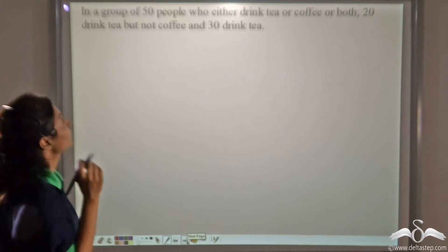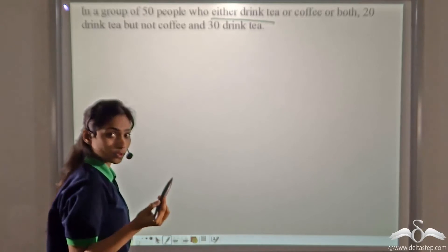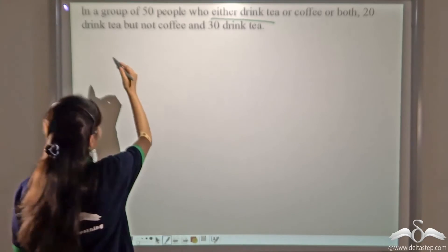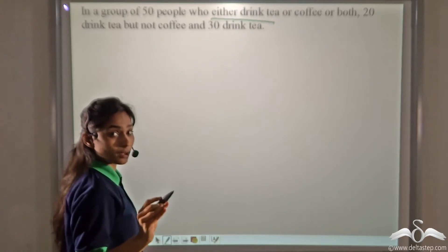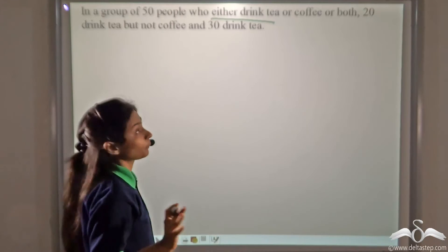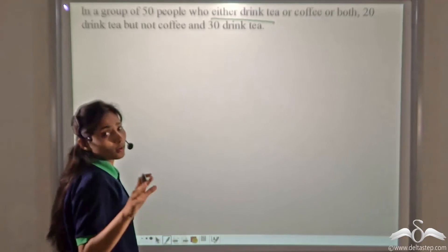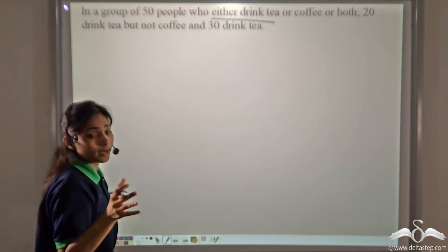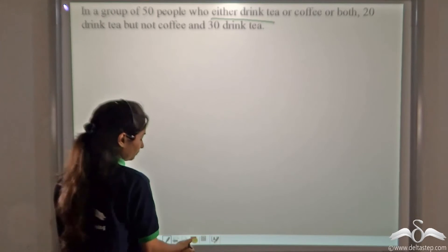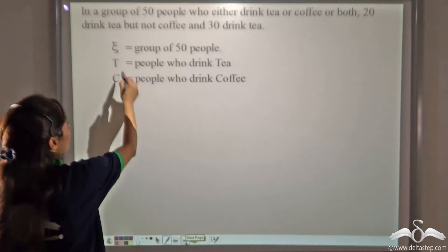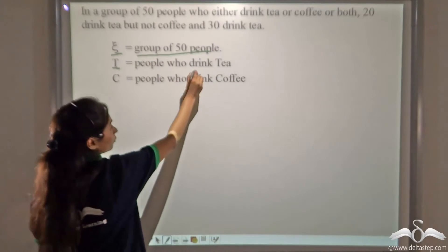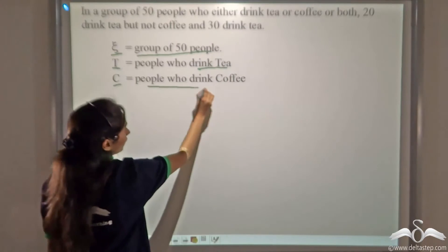Let's take another example. There is a group of fifty people who either drink tea or coffee or both. Twenty drink tea but not coffee, and thirty drink tea in total — meaning some of those thirty may also drink coffee. T refers to tea drinkers and C to coffee drinkers; fifty is our universal set.